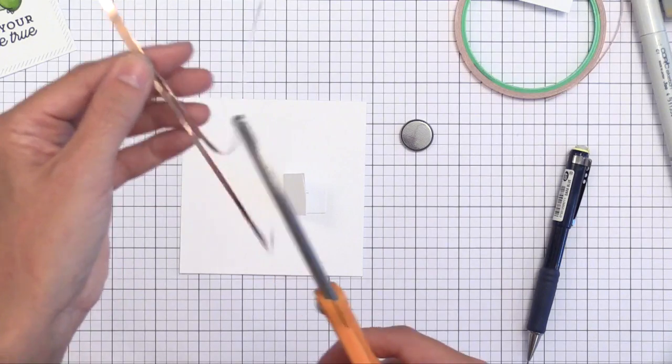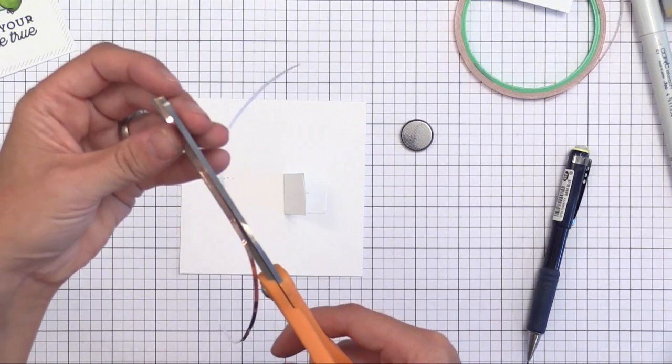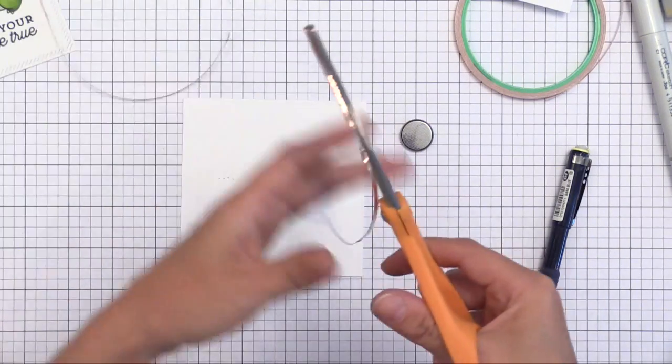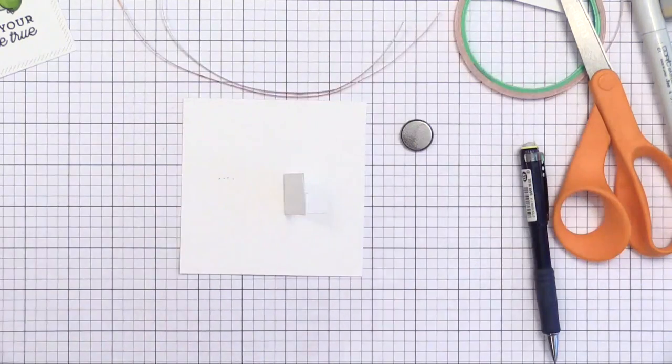This is the copper tape that comes in the package, and you can buy more separately if you need to. I like to cut it down the center so that it's narrow. I find it's easier to work with that way, and you can put it in tighter areas. So I have two strips ready to go.